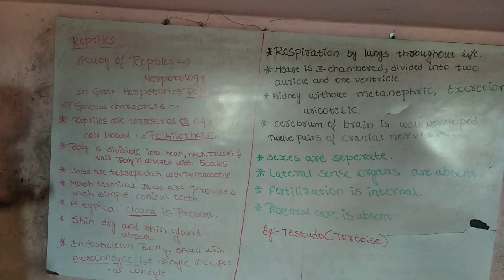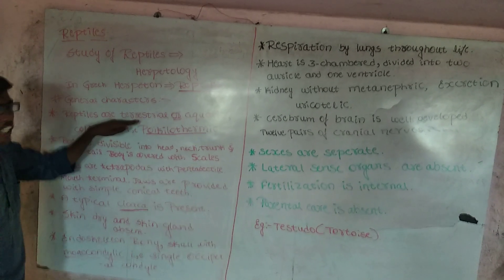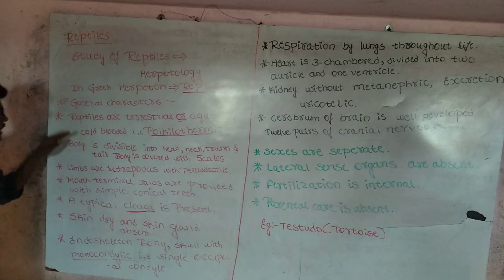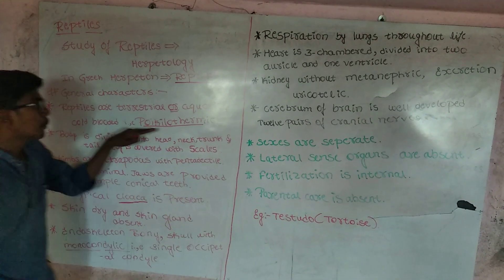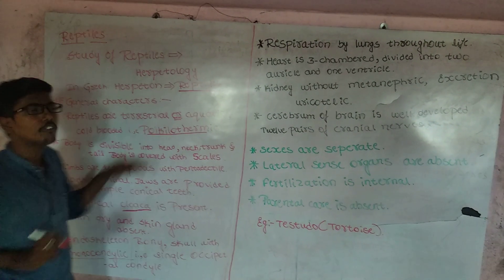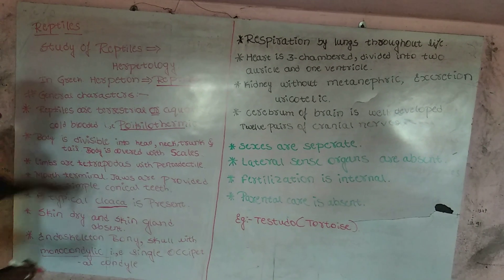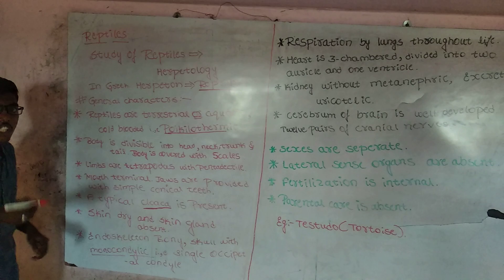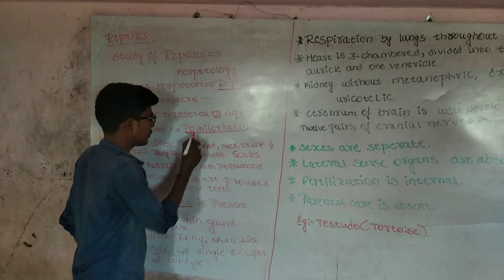Now I will explain the general characters of reptiles. Reptiles are terrestrial or aquatic. Reptiles are cold-blooded, that is known as poikilothermic. Poikilothermic means they do not regulate their body temperature according to their environment.